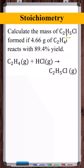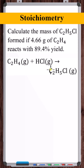Calculate the mass of ethyl chloride formed if 4.66 grams of ethylene reacts with an 89.4% yield. We want to start by determining the stoichiometric amount of ethyl chloride produced from 4.66 grams of ethylene, then take 89.4% of that amount to get the answer.